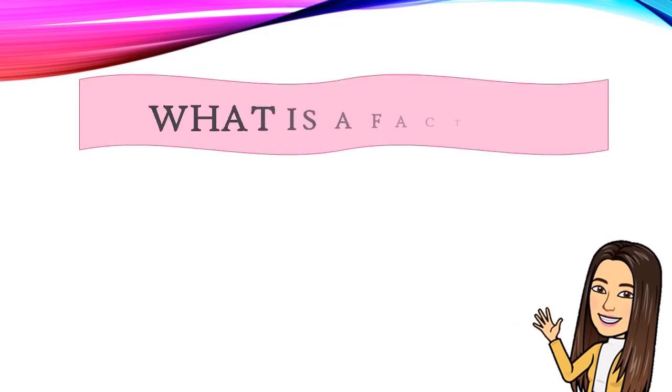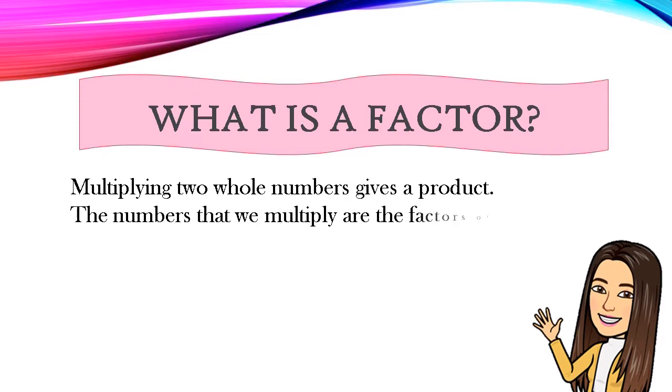What is a factor? Multiplying two whole numbers gives a product. The numbers that we multiply are the factors of the product. Example: 2 times 4 equals 8. 2 and 4 are called factors and 8 is called product.